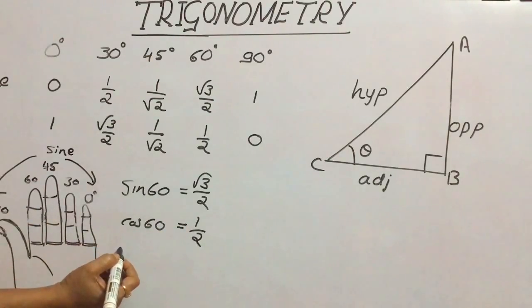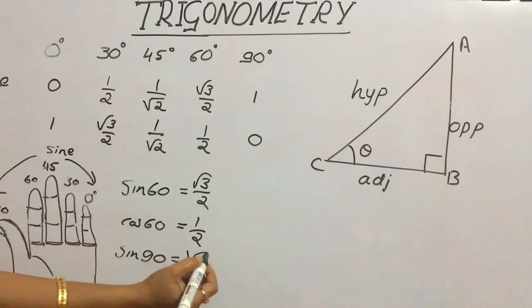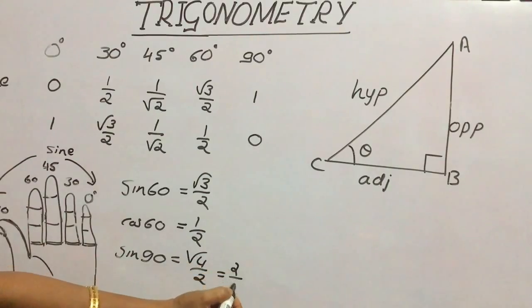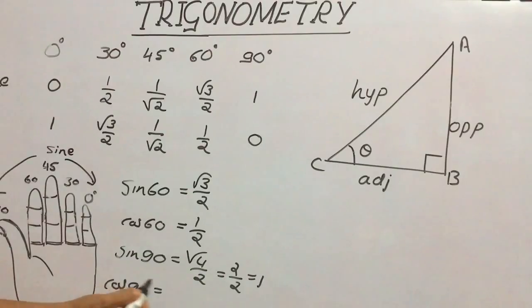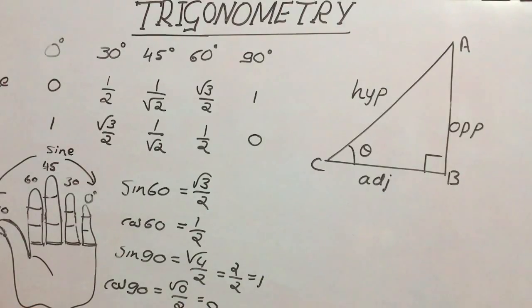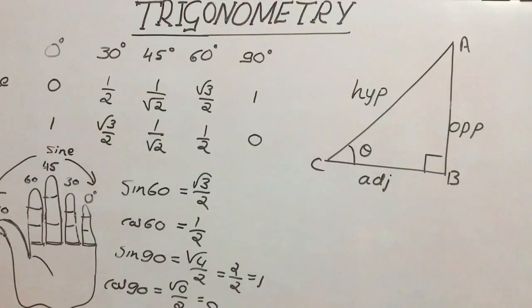Finally, for sin 90, the thumb has 4 fingers to its right, so sin 90 = √4/2 = 2/2 = 1. For cos 90, no fingers exist to the left of the thumb, so cos 90 = √0/2 = 0. Both match the table. In this way, we can easily remember trigonometric values for 0, 30, 45, 60, and 90 degrees using the finger technique.